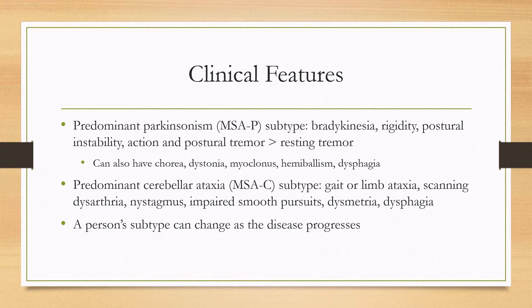For the other motor subtype, the predominant cerebellar ataxia subtype or MSA-C, you can see classic cerebellar symptoms such as gait or limb ataxia, scanning dysarthria, nystagmus, impaired smooth pursuits, dysmetria, and dysphagia. Note that as the disease progresses, a person's subtype can change as well.